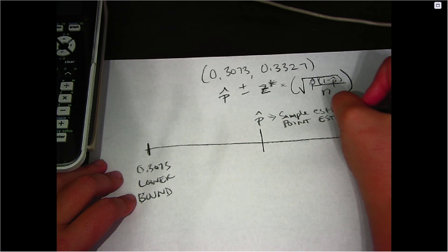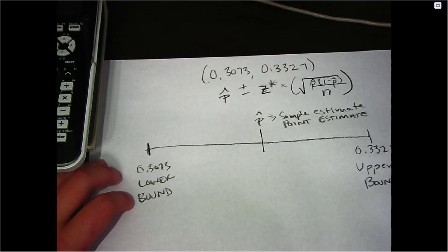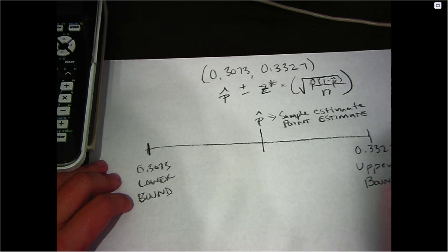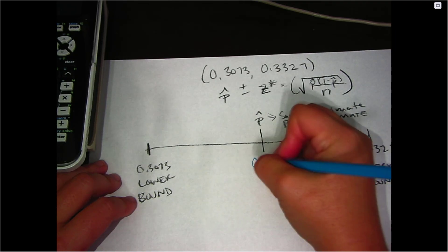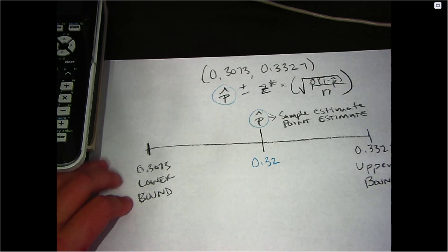So when we were looking at a confidence interval generically, we called it a point estimate. So that's what it is here. And for this problem, our p hat was 0.32. So it's in the exact center of these values. That's where p hat is located.